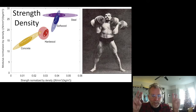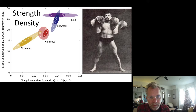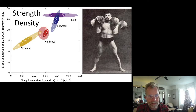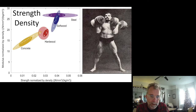So pound for pound, wood is as strong as structural steel and as stiff as structural steel. The weight of wood is about 8% of structural steel — dramatically lighter. Where steel might be 20 times as strong and 20 times as stiff, it's also 20 times as heavy. The strength density and stiffness density of concrete is actually way down — not because it's not strong and stiff, but because it's very, very heavy.